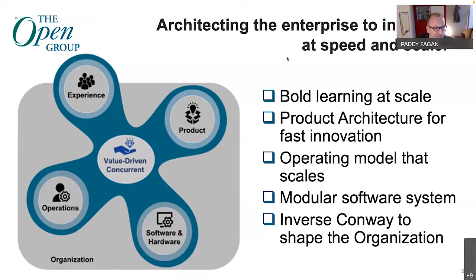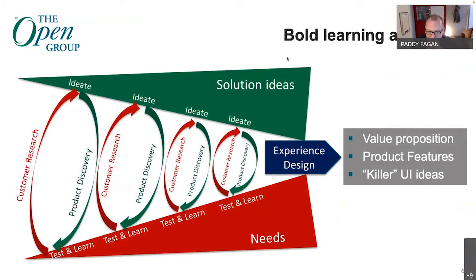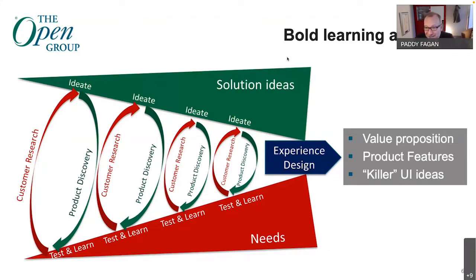Learning at scale is about iterative innovation — doing research, product discovery, ideation, testing and learning, then iterating and refining very quickly up the slope of addressing more and more needs, iterating across solution ideas to drive to something with the right value proposition, the right product features, and the right UI. What you want to do is iterate on that process, not sit in a room and say we're going to build the killer product — go build it and see what happens. Rather, take the idea and play it back to people.